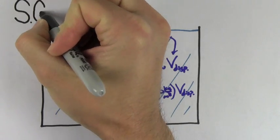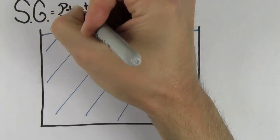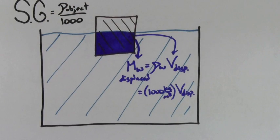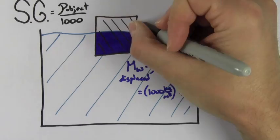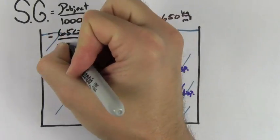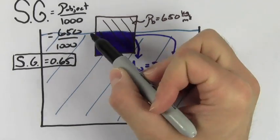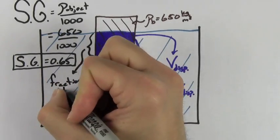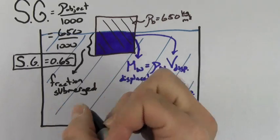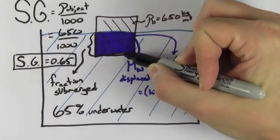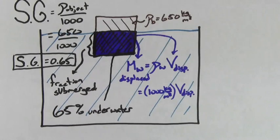The specific gravity of an object is defined to be the density of that object divided by the density of water. If this wooden block has a density of 650 kilograms per meter cubed, you get a specific gravity of 0.65. The specific gravity is useful because it tells you the fraction of the object that's submerged while it's floating in water. In this case, 65% of the block will be below the surface of the water and 35% will be above it.